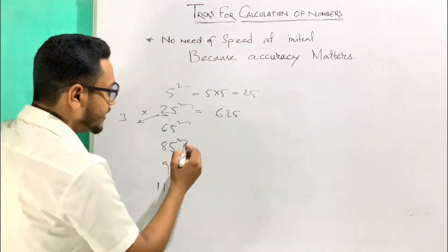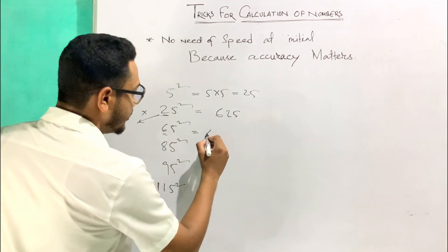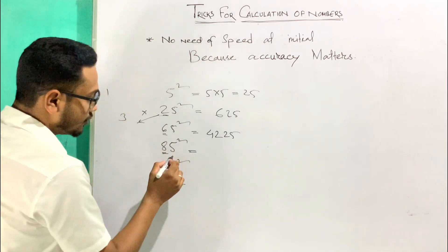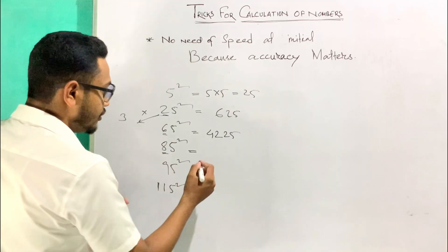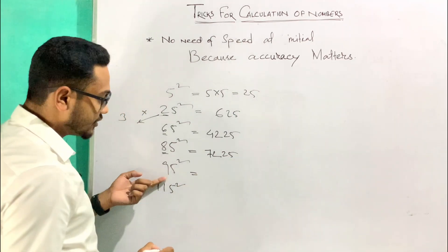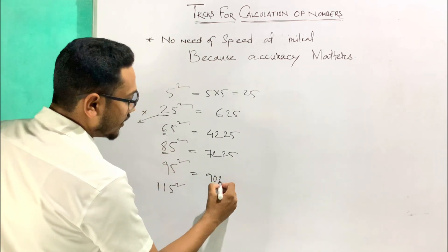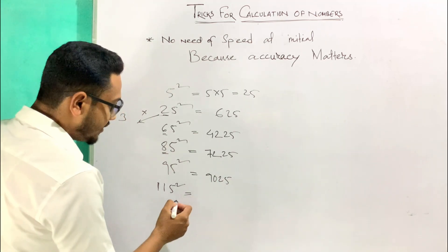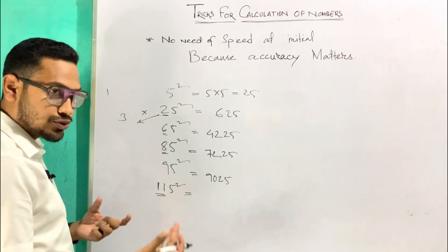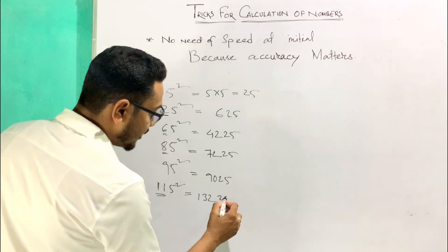So 25 squared equals 625 — quite easily the result has come out. What is the successor of 6? That is 7. So 7 times 6 is 42, and then write 25, giving 4225. The successor of 8 is 9, so 8 times 9 is 72, and writing 25 gives 8225. The successor of 9 is 10, so 10 times 9 is 90, and writing 25 gives 9025. For 115, the successor of 11 is 12, so 11 times 12 is 132, then write 25.